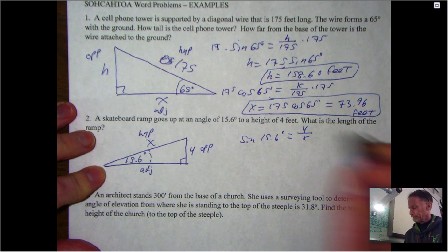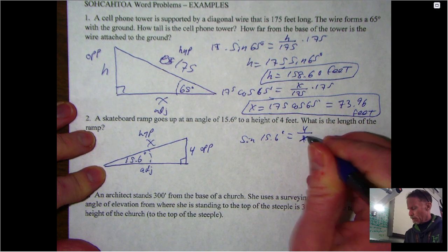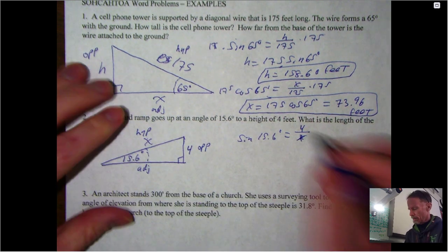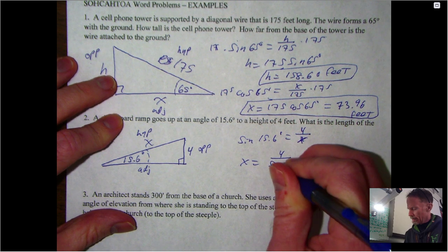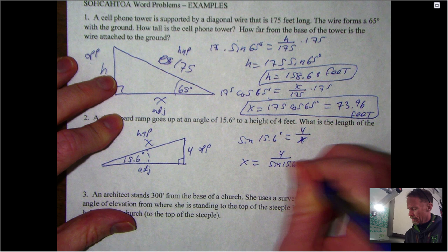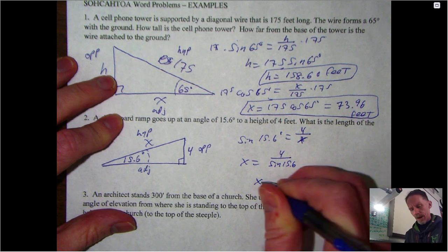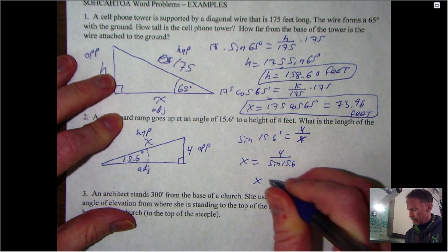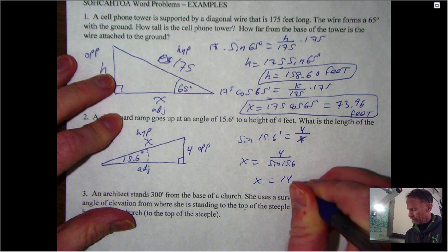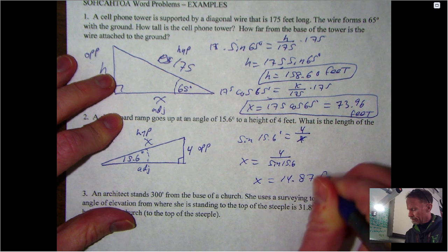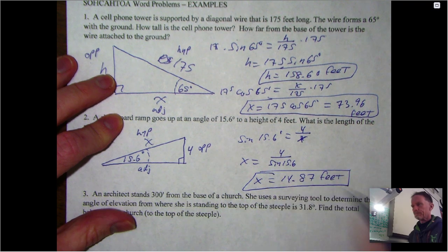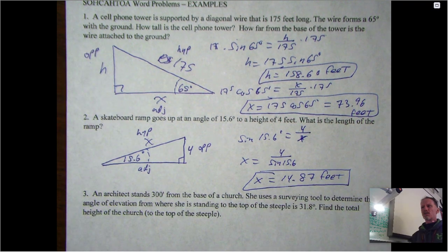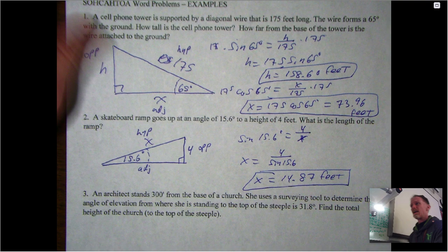I promise all of them will not be sine functions. So here we'll set up: sine of 15.6 degrees is equal to 4 over x. Make sure you put it in the right order. This is a division question - these two guys have switched places - so x is going to be equal to 4 over sine 15.6, and you pop that in calculator, you get about 14.87.